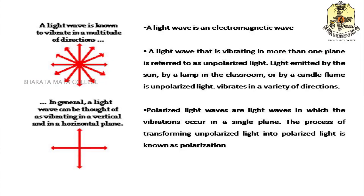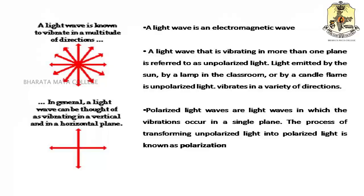Consider ordinary light — light from an incandescent bulb, from sunlight, or even from candlelight. We can see that the vibrations of the particles are in all directions. So these lights are known as unpolarized light. When the vibrations of light are confined along a particular line or a particular plane, it is known as polarized light.